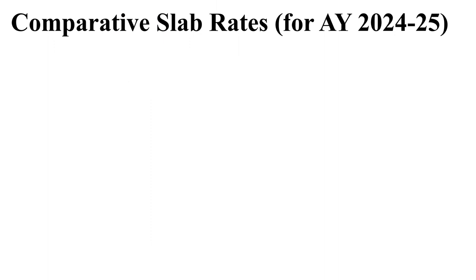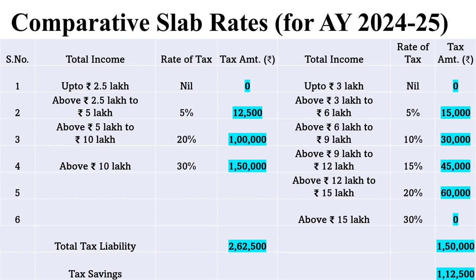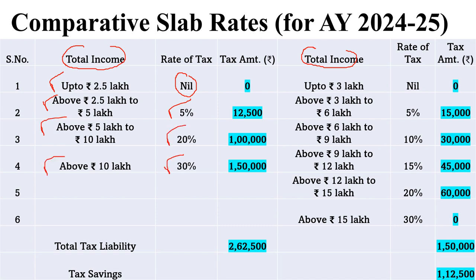The first point I want to begin with is the comparative slab rates for assessment year 24-25, that is financial year 23-24. Under the old slab rate, up to 2.5 lakh rupees tax liability is nil; from 2.5 lakh to 5 lakh it is 5%; above 5 lakh to 10 lakh it is 20%; and above 10 lakh it is 30%.